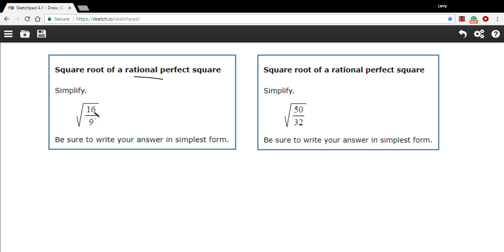We have 16 over 9 and both of those should pop right out to you as perfect squares, something you can take the square root of easily.